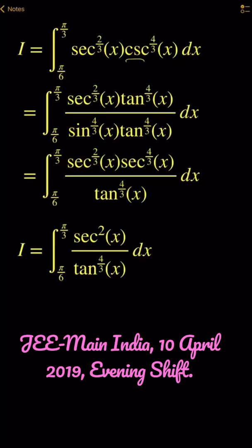Change cosecant to 1 over sin and then multiply top and bottom with tangent power 4 over 3, and then we get the new I which is in much nicer format.